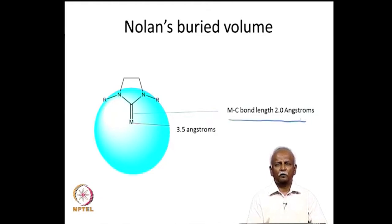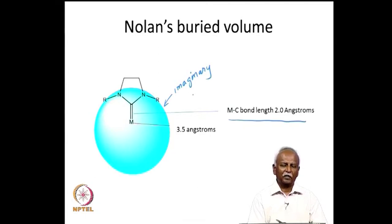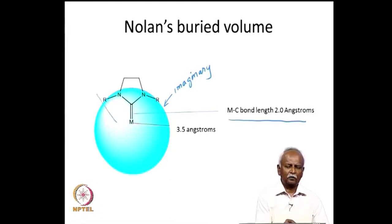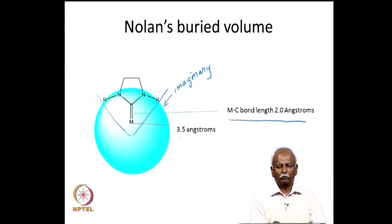Nolan extended Tolman's cone angle concept by assuming a fixed metal-carbon bond length of 2 Å. He then defined an imaginary sphere of radius 3.5 Å around the metal atom, positioned the carbene within it, and measured the volume occupied by the carbene within that sphere. This occupied volume is essentially a solid cone.